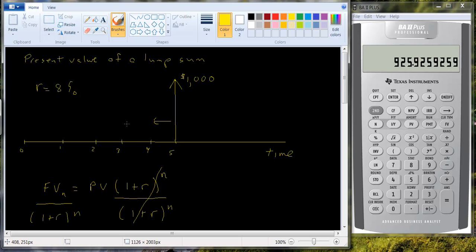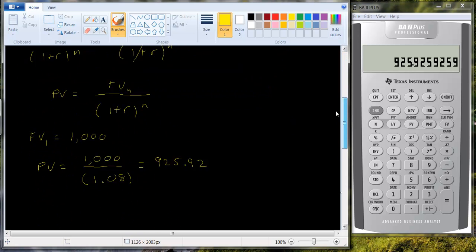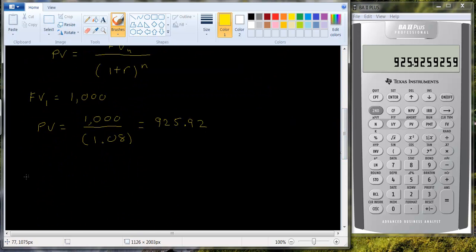What would it be worth if we brought it back a second period? Well, we could bring back the nine twenty five ninety two. So we could have the present value of the nine twenty five ninety two divided by one point zero eight.